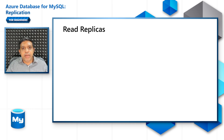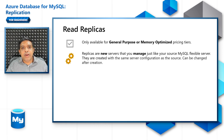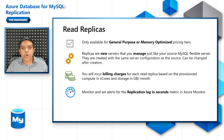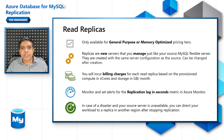Some facts about read replicas: they are only supported on general purpose and memory optimized tiers. They are created with the same compute and storage configuration as your primary server, with an option to change it later. Billing is done separately based on the storage and compute used. For monitoring, there is a metric called replication lag in seconds which shows how far behind the replica is. In case of a disaster, you can stop replication and make the replica server read-write to continue using it for application workloads.